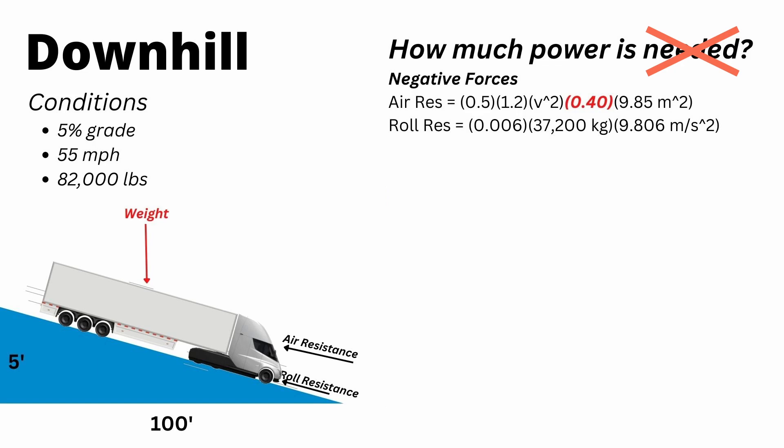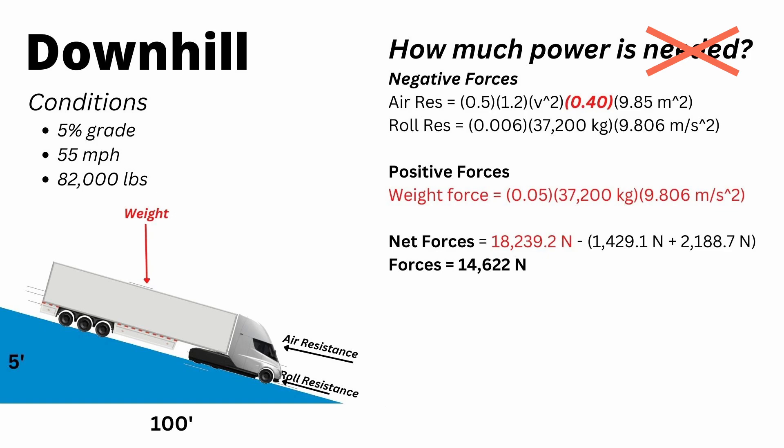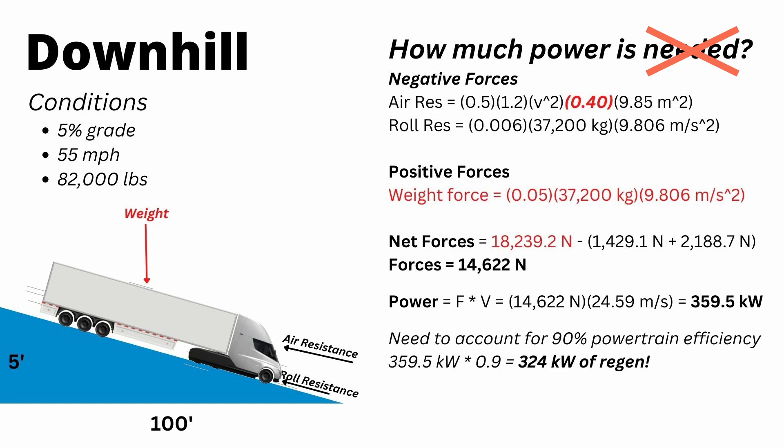So our forces come out to being exactly the same. Air resistance and rolling resistance are acting in the negative direction on the truck. The horizontal component of the weight force is acting in the positive direction of the truck. So net forces on the truck come out to 14,622 newtons. We see that power to keep the truck stationary is in the negative direction, 360 kilowatts. But again, need to account for 90% powertrain efficiency. So in this case, we're actually going to be multiplying by 0.9. And we see that regen in this scenario is 324 kilowatts. And that's while maintaining 55 miles an hour, not slowing down.